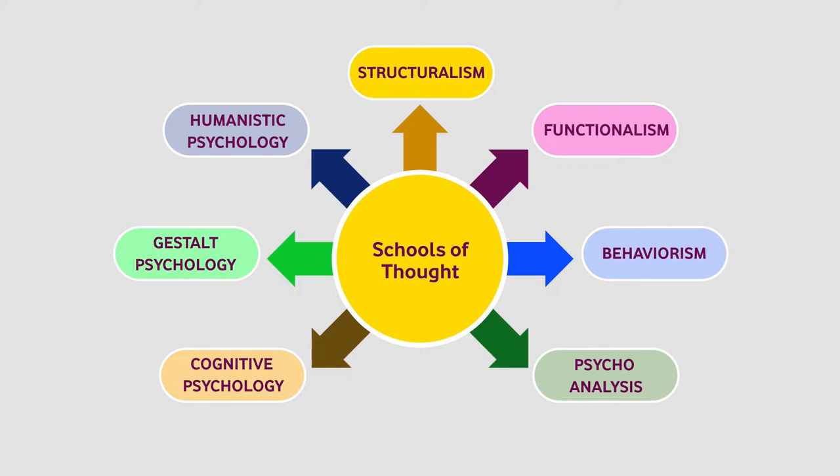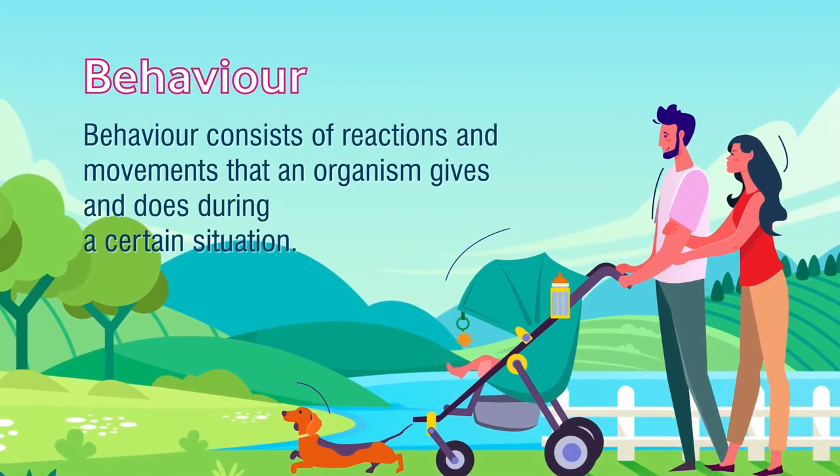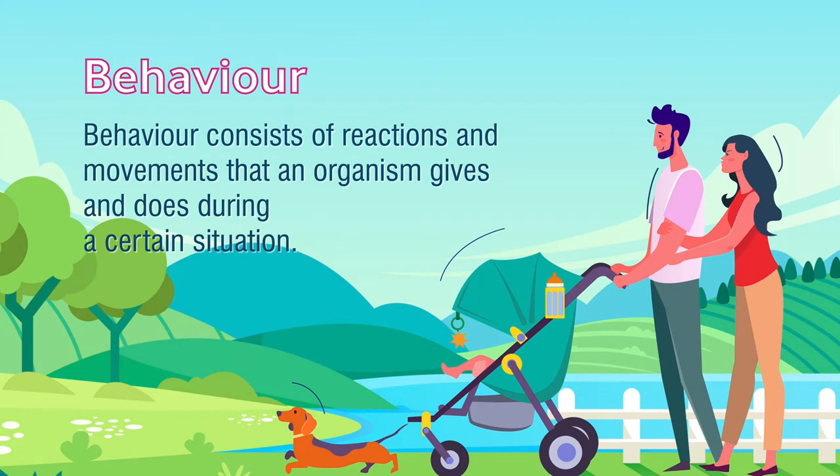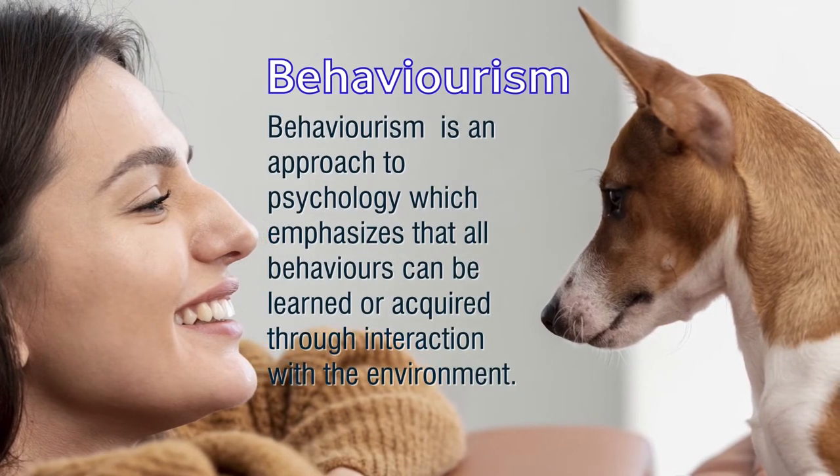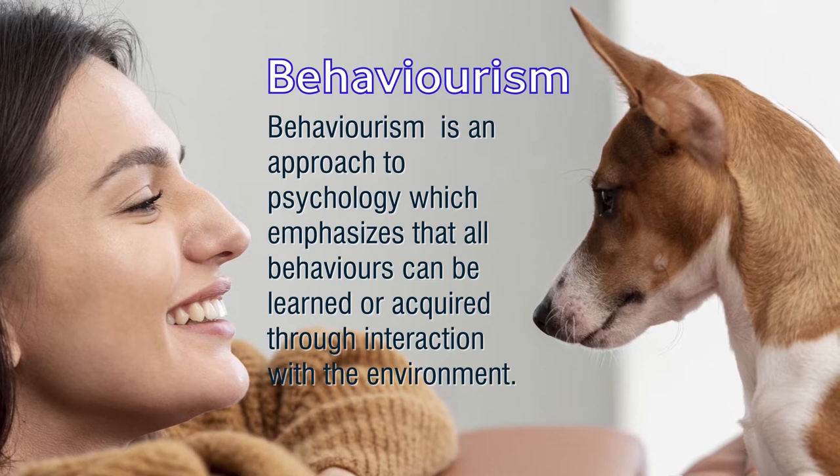Out of these schools of thought, today I will discuss and focus only on behaviorism. First of all, a question comes to our mind: what is behavior? Behavior consists of reactions and movements that an organism gives and does during a certain situation. According to the behaviorist approach, nobody is good or bad from birth — it depends on what kind of environment, experiences and situations one is getting, and accordingly behaviors are acquired. The next important concept is behaviorism itself: it is an approach to psychology which emphasizes that all behaviors can be learned or acquired through interaction with the environment.